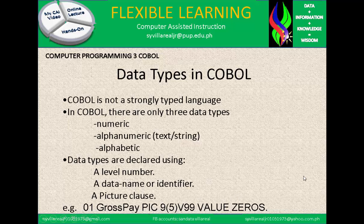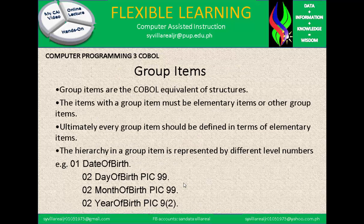Group items are the COBOL equivalent of structures. The items within a group item must be elementary items or other group items. Ultimately, every group item should be defined in terms of elementary items. The hierarchy in a group item is represented by different level numbers. For example: 01 DATE-OF-BIRTH; 02 DAY-OF-BIRTH PIC 99; 02 MONTH-OF-BIRTH PIC 99; 02 YEAR-OF-BIRTH PIC 9(4). So 01 is DATE-OF-BIRTH as a group, and the 02 level items are grouped together under it — connected to each other as a group.